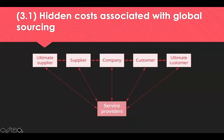Global sourcing is the practice of obtaining products and services from the worldwide market, normally in order to achieve cost savings. The savings are frequently achieved by seeking efficiencies in skilled labour, raw materials, or reduced import tariffs. It usually involves an extended supply chain which includes raw materials and suppliers from the primary sector, products and producers from the secondary sector, distributors and retailers from the tertiary sector, and then customers and consumers.